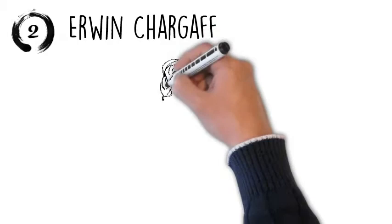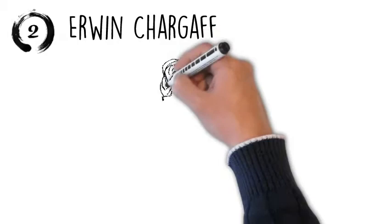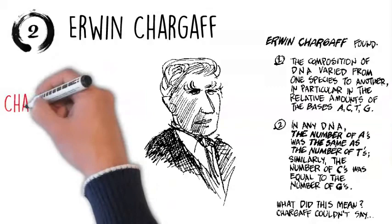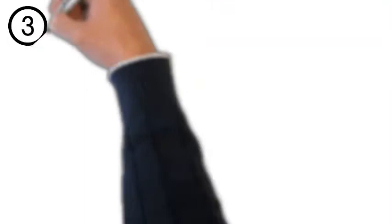Erwin Chargaff discovered that different organisms had different amounts of adenine, cytosine, guanine, and thymine. However, he noticed in all organisms that the amount of adenine was always equal to the amount of thymine, and the amount of cytosine was always equal to the amount of guanine.